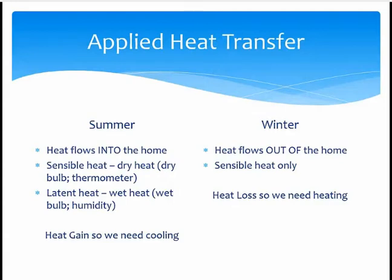So the reason that we do a load calculation is because of the heat transfer we saw in the previous illustration. In summer, heat flows into the home, and there are two types of heat. There's sensible heat, which is dry heat — the temperature that we see on the thermostat, or the dry bulb temperature. There's also latent heat. However, this is the wet heat, and it's the one that we associate with humidity, and we also call it the wet bulb temperature.